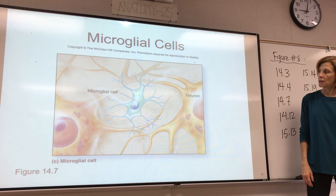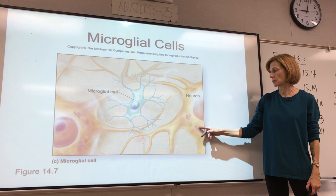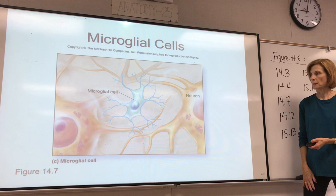Notice in these neurons, it's showing you the Nissl bodies that we talked about, also called chromatophilic substance — the rough endoplasmic reticulum and ribosomes.